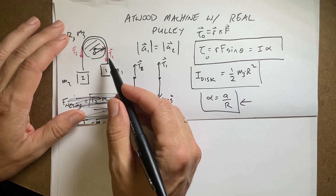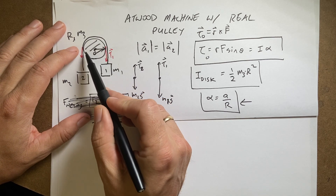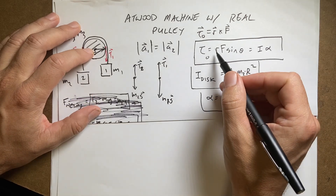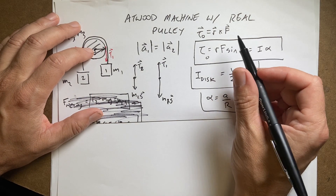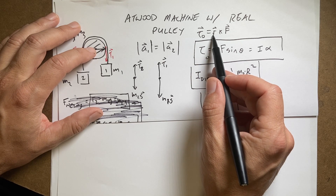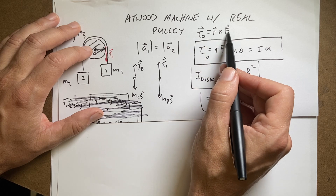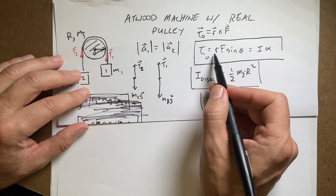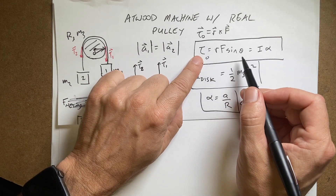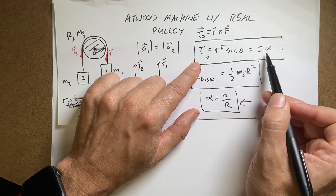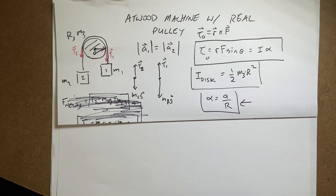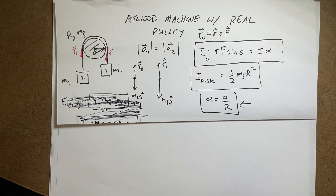Let's look at some important ideas about rotating objects. The first is torque. Torque is defined in one dimension — it's the radius from the point of torque to the force, r cross f. But we can use the easier formula: torque equals r·f·sin(θ), where θ is the angle between the torque arm and the force. Torques cause objects to change rotational motion — that's alpha, the angular acceleration. I is the moment of inertia, the rotational mass — it's what resists changes in rotation, just like mass resists changes in linear motion.